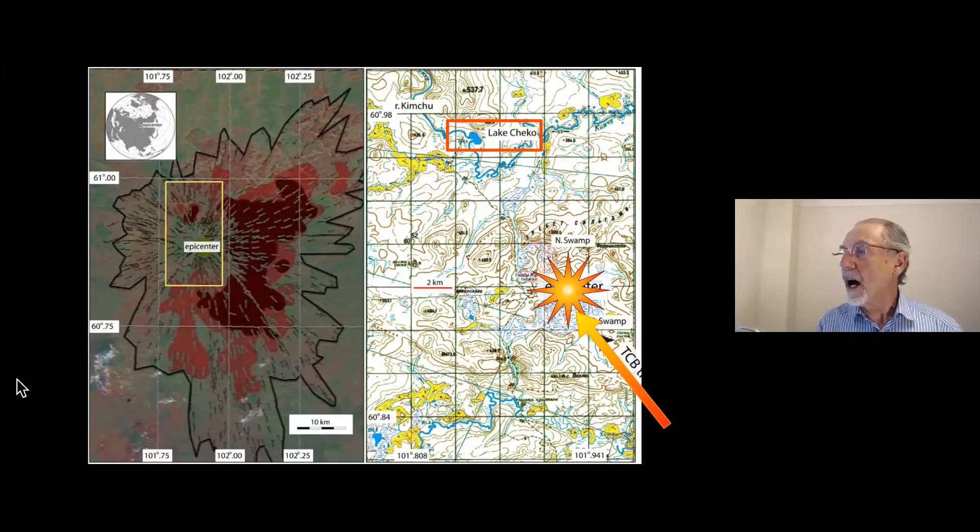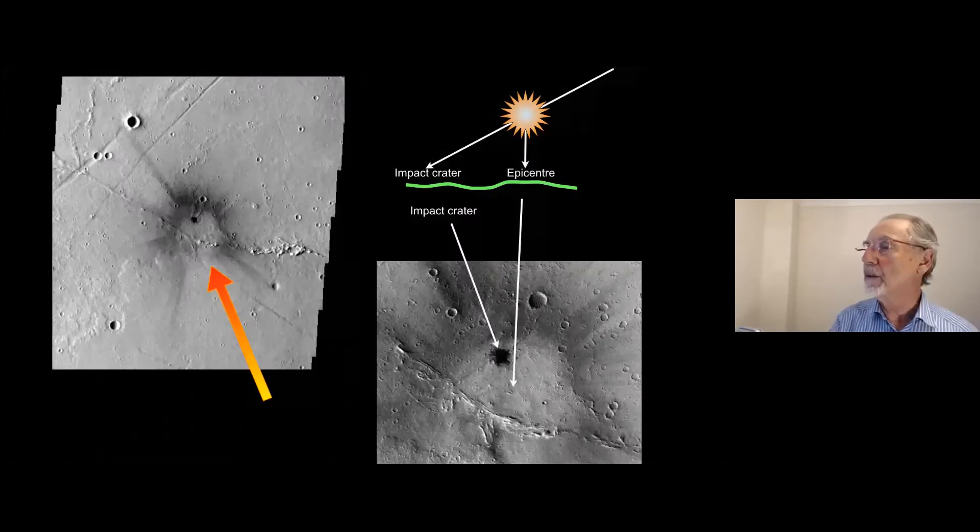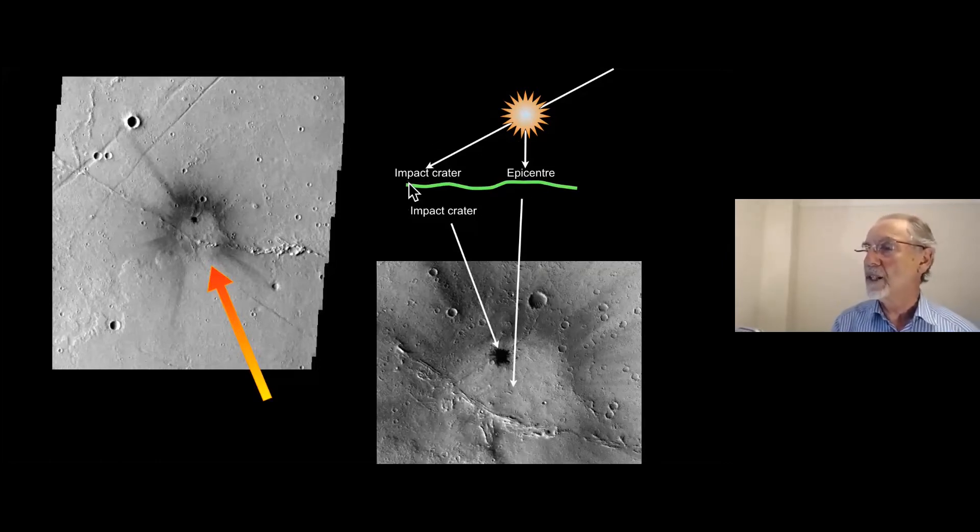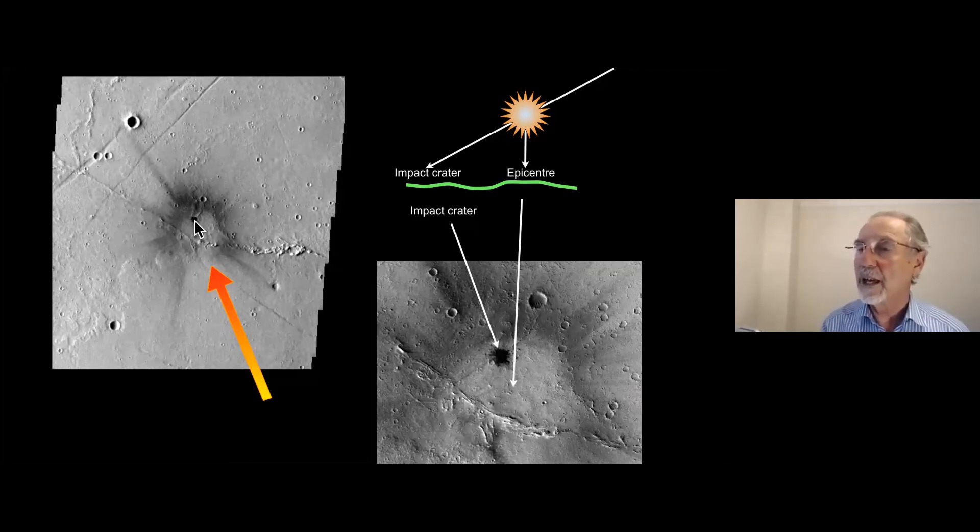But recent more careful examination, it was noted that this Lake Cheko lay about seven kilometers down range from the epicenter of the explosion. And just to clarify what I'm talking about here, if we look up here, imagining an object coming in in this direction, it explodes at this point. So this is the epicenter immediately under it, and the impact crater occurs down range. And we see an example of this on the surface of Mars. There's the impact crater, and underneath this ring is the epicenter.